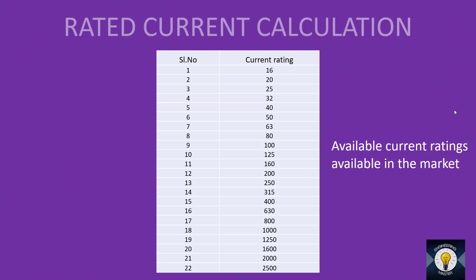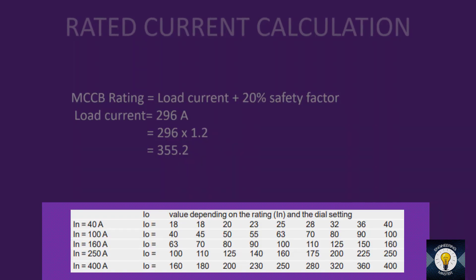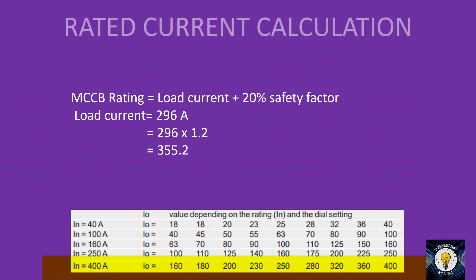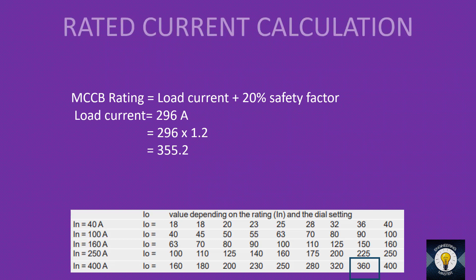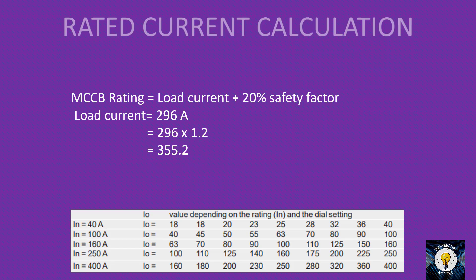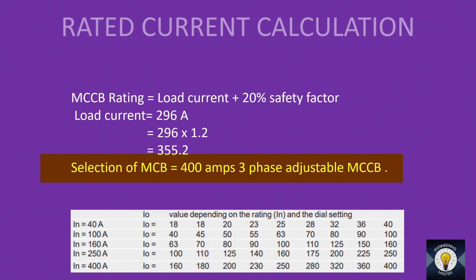Looking at the catalog, the 400 A breaker is available with adjustable current settings — nine settings from 160 A to 400 A (160, 180, 200, etc.). Inspecting the table, we can see 360 A is available. Our required rating is 355.2 A, which is very close to 360 A. So we select a 400 A three-phase adjustable MCCB and adjust its setting to 360 A.